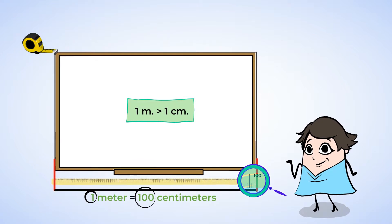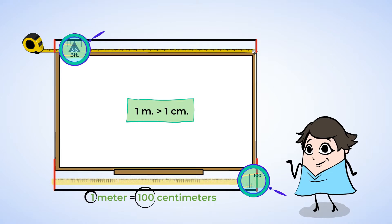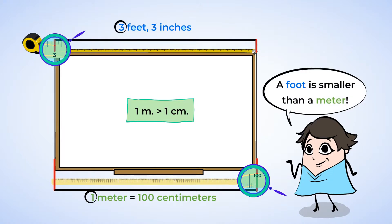Now, let's use a measuring tape to see how many feet the whiteboard is. Okay, if we look at the measuring tape, we can see that the whiteboard is just over 3 feet long. So, we need more feet than meters to measure the whiteboard. Uh-huh! That must mean that a foot is smaller than a meter.